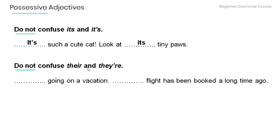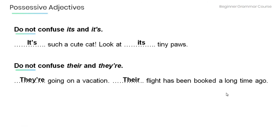Also, do not confuse 'their' and 'they're.' Read the following sentence and fill in the gap: '___ going on vacation. ___ flight has been booked a long time ago.' Answer: 'They're going on vacation. Their flight has been booked a long time ago.'